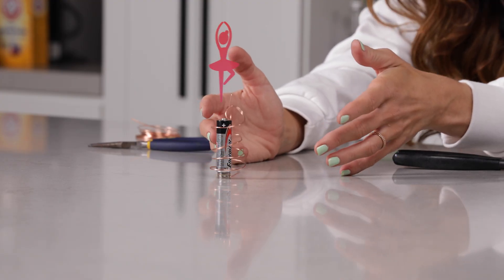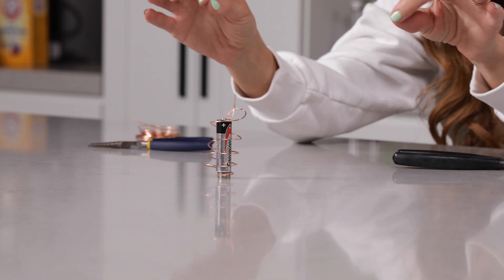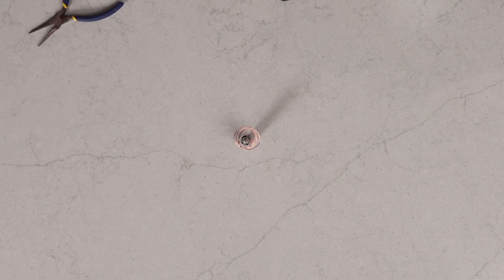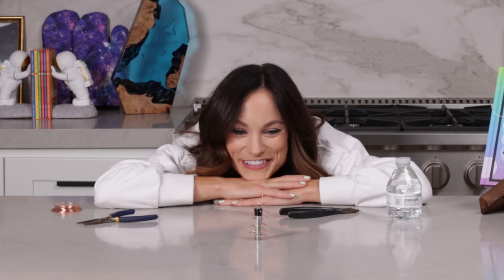And if you want to get really creative, you can add paper to this to make it look actually like a dancer. So it's like a twirling dancer around your battery. Whoa, look at that. I cannot believe this is working so well.